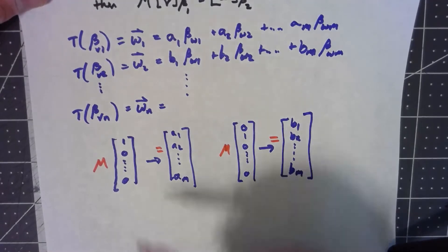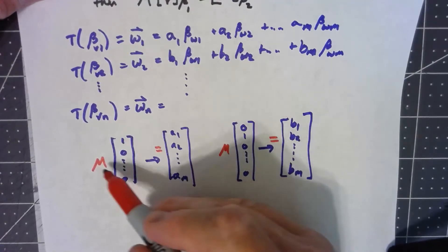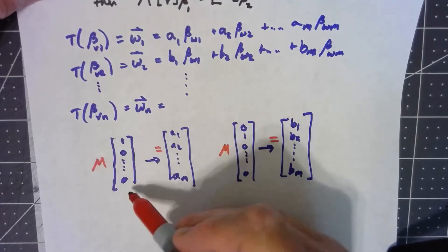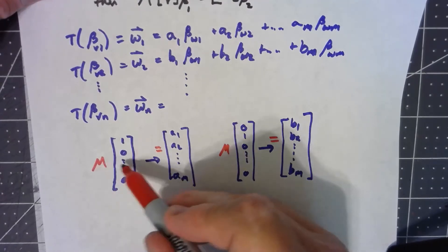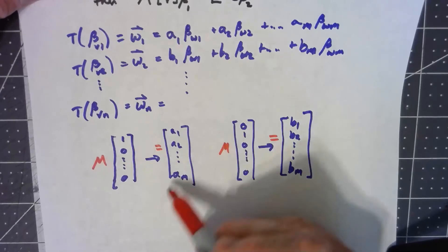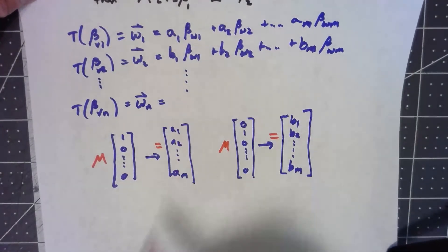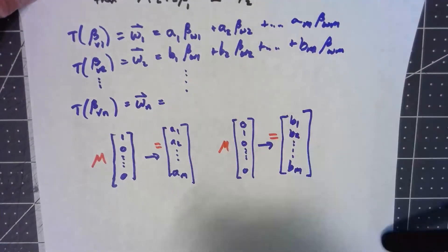But if we think about one of the ways we've done this before, multiplying a matrix times a vector, the vector gives you the linear combination of the columns of the matrix. This is just saying that the first column of M is exactly those coordinate vectors. This says the second column of M is exactly those.